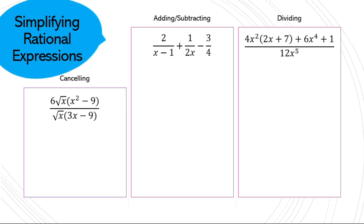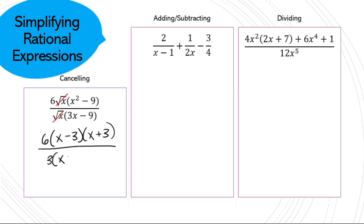On simplifying rational expressions: when you can cancel common factors right away, do so. For what's left, factor the top as a difference of squares, and common factor the bottom. Cancel further, and you get basically a linear expression. The restriction was x cannot equal 3 because of the x in that factor.